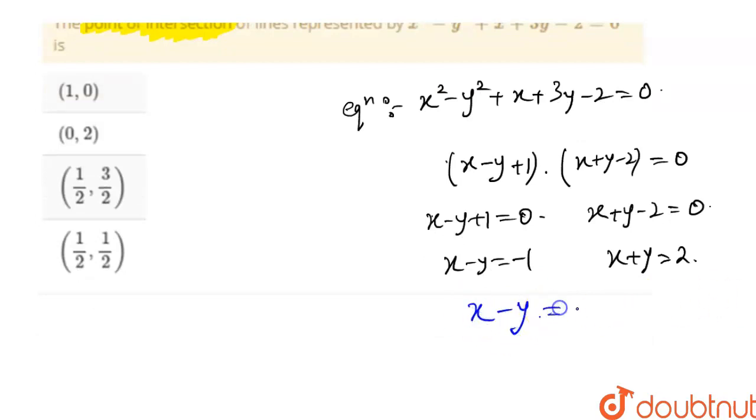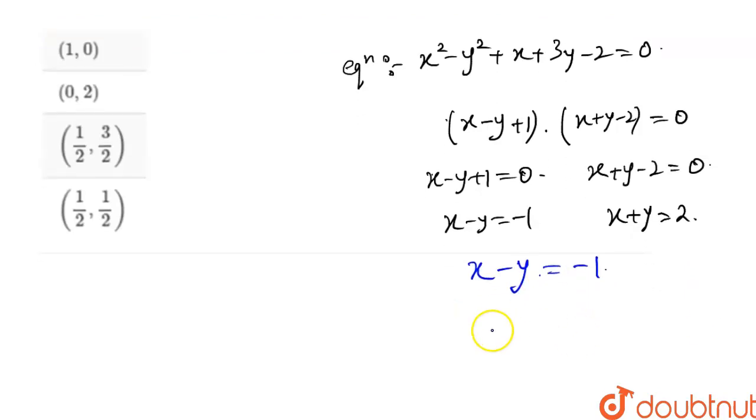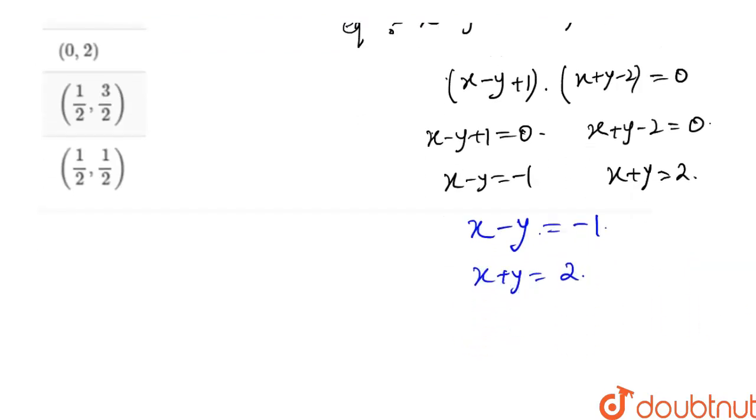When I solve these two simultaneously, x minus y's value was minus 1, and x plus y was equal to 2. Now I'll add these two. When I add these two, x plus x plus y and minus y cancel out. What remains here? Here I get 2x is equal to 2 minus 1, which is going to be 1.